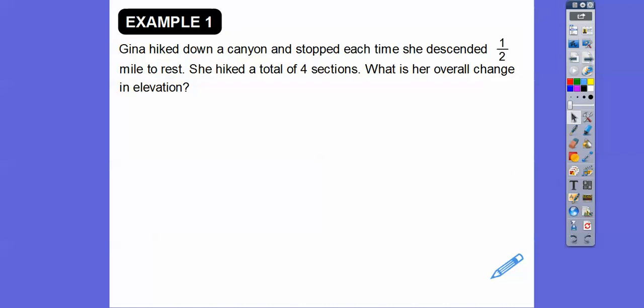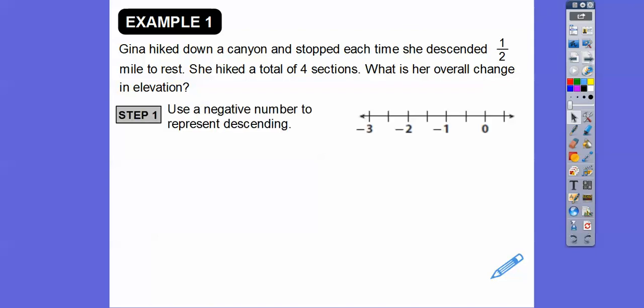Gina hiked down a canyon and stopped each time she descended one half of a mile to rest. She hiked down a total of four sections, so every half a mile she stopped — she stopped four times. What's her overall change in elevation? She's descending, so we use negative numbers. We're looking for 4 times negative one half.